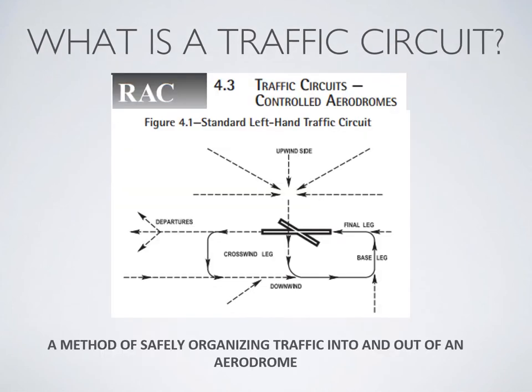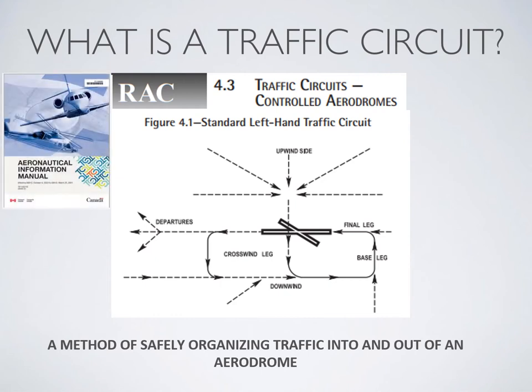The key thing about the traffic circuit is organization. If all aircraft fly the circuit pattern correctly, they can be properly separated and brought in for landing in a safe and efficient manner. If you skip over to the TC Aeronautical Information Manual — the AIM — and flip to the Rules of the Air and Air Traffic Services, section 4.3, you'll find an image of a standard circuit at a controlled aerodrome.